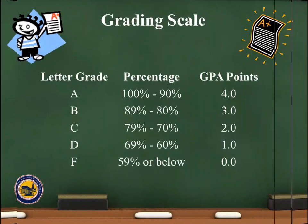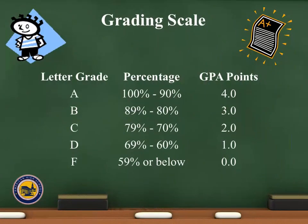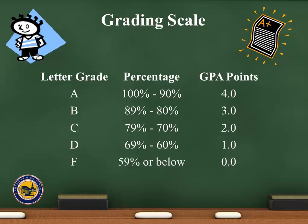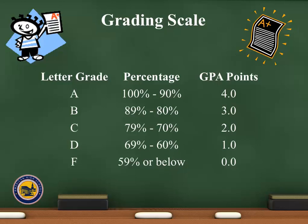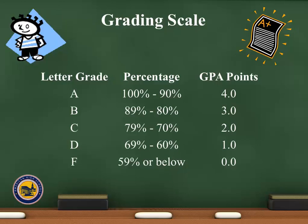The American High School grading scale is as follows: 100% to 90 is an A, 89% to 80 is a B, 79% to 70 is a C, 69% to 60 is a D, and 59% or below is an F. American High School calculates GPA on a 4.0 scale, the top grade being an A which equals a 4.0. This is also the standard scale for most colleges and high schools.